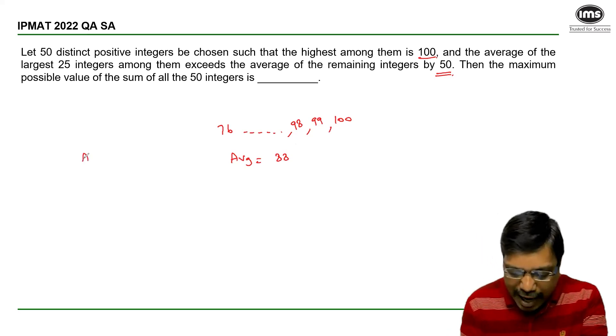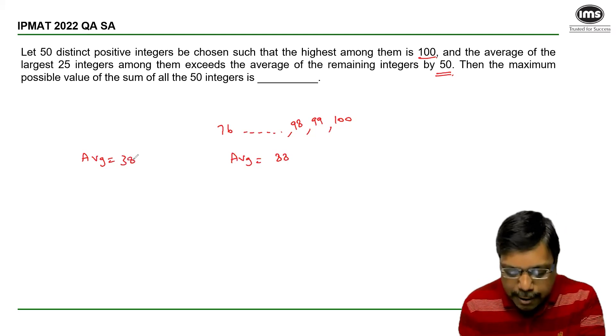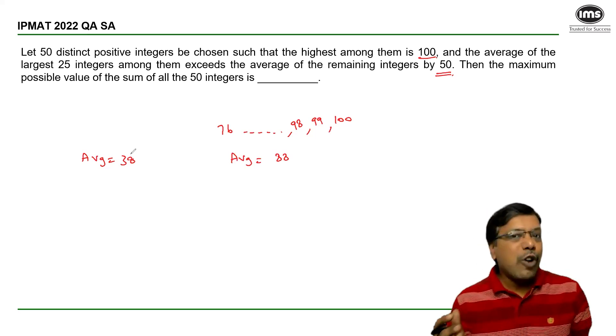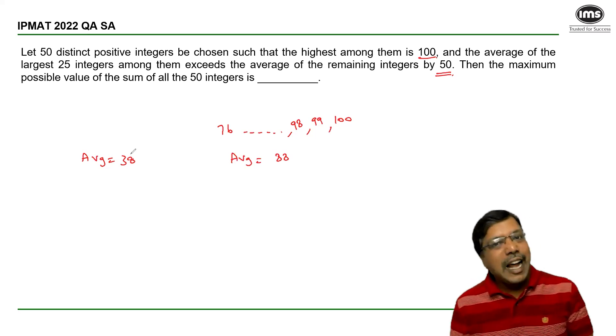So I understand that the average of the remaining 25 integers is 50 less than 88, that is 38. Going by the same logic that in a set of consecutive 25 integers, the middle value will be the average.